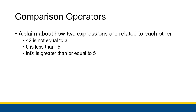The first type of operators we'll talk about are comparison operators, which serve to make a claim about how two expressions are related to each other. Remember that expressions can actually include values themselves — 42 could be considered an expression, or 3 could be considered an expression. Also, the variable int x can be considered an expression by itself.